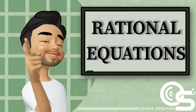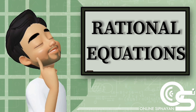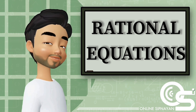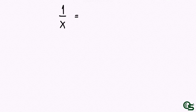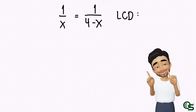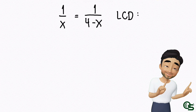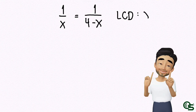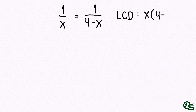Good day students! I'm here to teach you how to solve a rational equation. The given is 1 over x is equal to 1 over (4 minus x). The first thing to do is find the LCD, or the least common denominator. The LCD is x times the quantity (4 minus x).